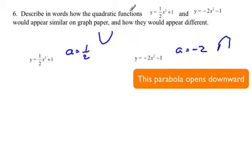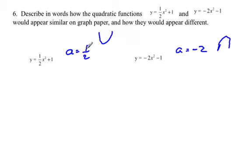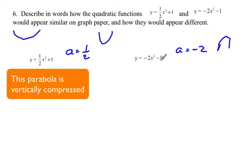Now, another difference here is a is one-half. And I'm ignoring the sign right now. And here, the a is two, or it's negative two. So this means that this parabola is going to be flatter or vertically compressed.